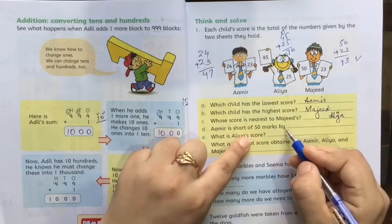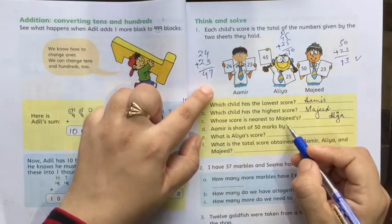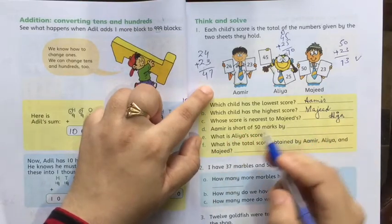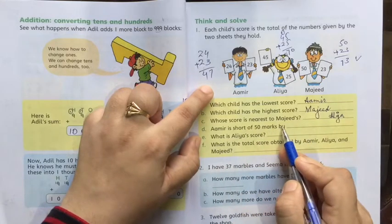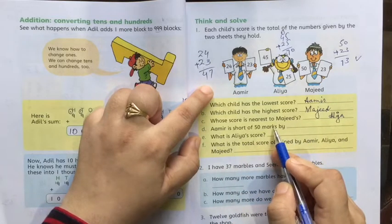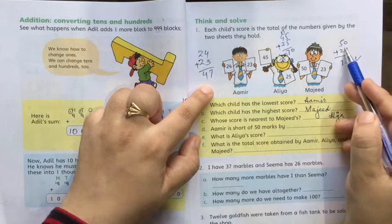Amir is short of 50 marks by... Amir is 50 marks less than whom? 50 marks by Majeed.